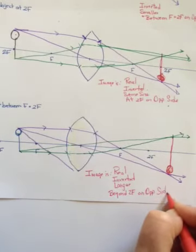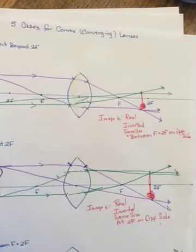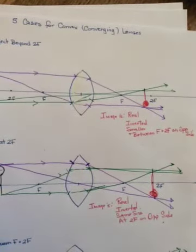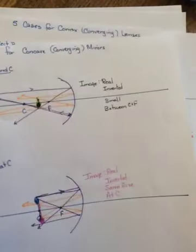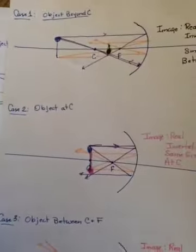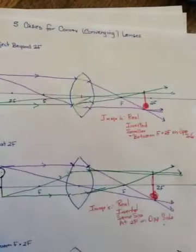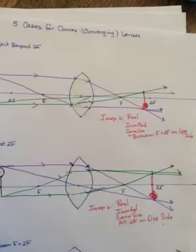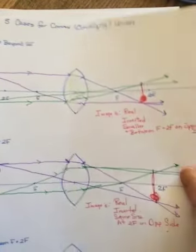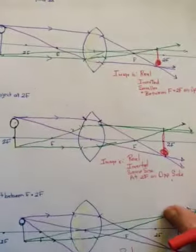I'm hoping you recognize the exact parallels to the first three cases we did with mirrors. Beyond c it ended up between c and f; at c it ended up at c; and between c and f it ended up beyond c. They are exactly the same for lenses, just that they go on the opposite side.